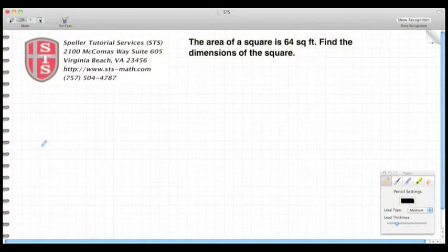Welcome back to Speller Tutorial Services. Today we're talking about word problems, and we'll begin with the word problem above. The word problem states that the area of a square is 64 square feet, and we need to find the dimensions of that square.